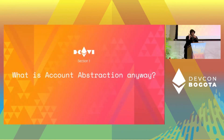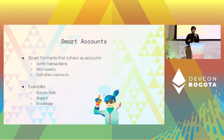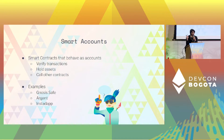Let's first define what account abstraction is. To better understand this, it's better to speak about smart accounts. Smart accounts are basically smart contracts that behave as accounts — they verify transactions, hold assets, and manage privileges and roles like owner. They can also call other contracts, which is very important.